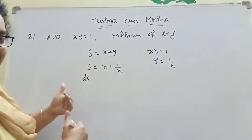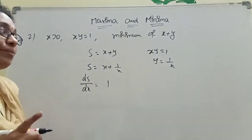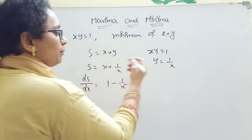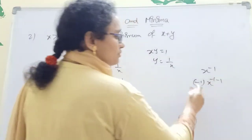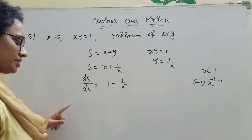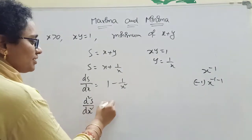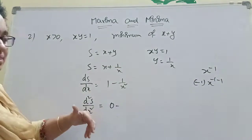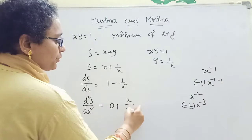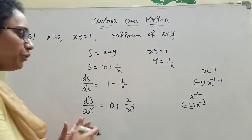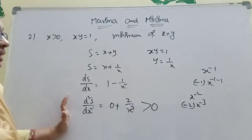Now take the derivative. DS/DX = 1 − 1/X². Remember: derivative of 1/X = X^(−1), which gives −X^(−2) = −1/X². Now do the second derivative: D²S/DX² — here 1/X² means X^(−2), so the derivative is −2X^(−3), which is +2/X³. Since 2/X³ is positive, the double derivative is greater than 0, so this is a minimum.